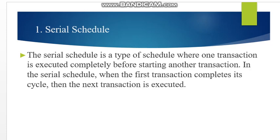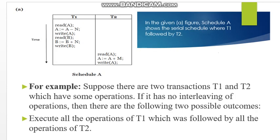What is serial schedule? The serial schedule is a type of schedule where one transaction is executed completely before starting another transaction. In the serial schedule, when the first transaction completes its cycle, then the next transaction is executed. If you have transactions T1 and T2 present in schedule S, according to the serial schedule, T1 will get executed first and after that T2 will get its complete execution. This is called a serial execution of transaction.